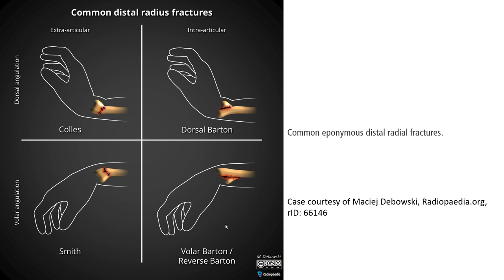On the right upper quadrant, we call this the dorsal Barton fracture, where the fracture is an intra-articular fracture of the distal radius.